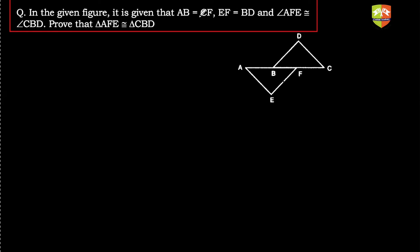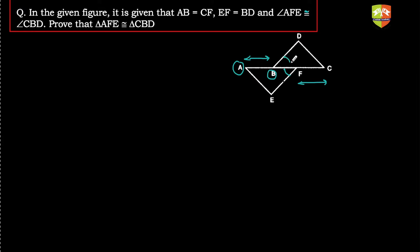In the given question, AB is equal to CF. Let's locate AB — this is A, this is B, so AB is given equal to CF. And angle AFE is equal to angle CBD. This is angle AFE, and this is CBD. They are equal.